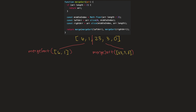For each of these sub-arrays, we end up at this portion of the code again. Both of these arrays are not less than length two — we have an array of length two and an array of length three. So they're going to move on to the divide and conquer approach once again, where we get the middle index and create a left array and a right array by splitting on the middle index.